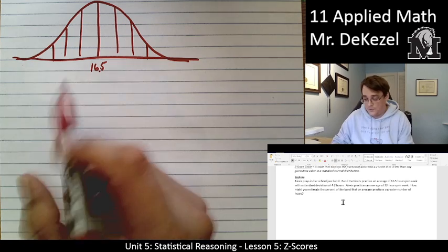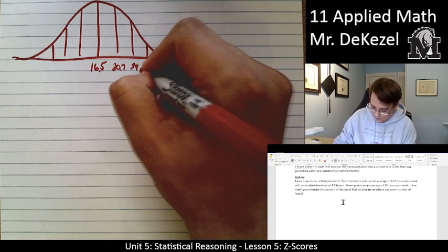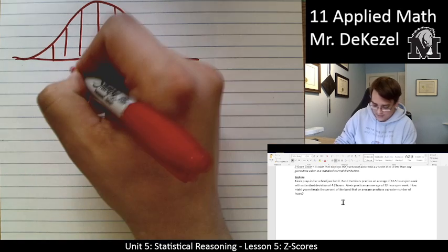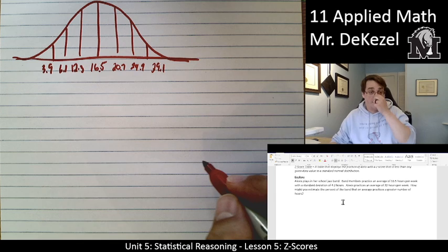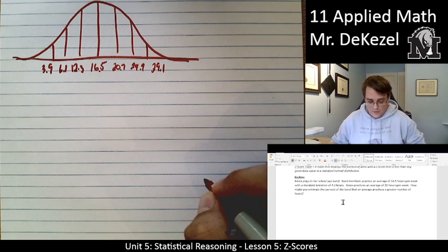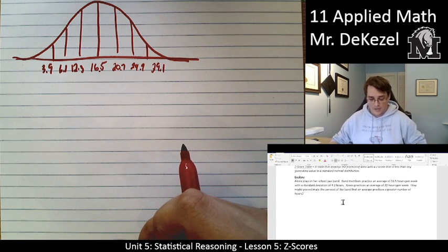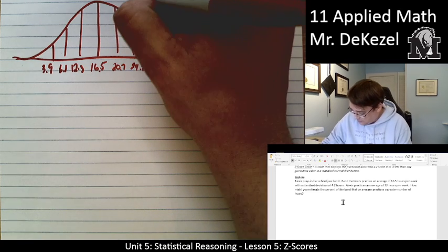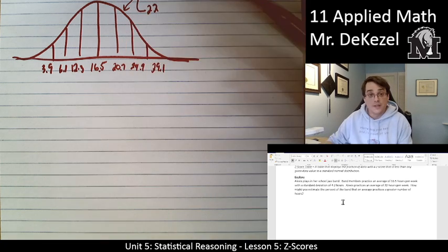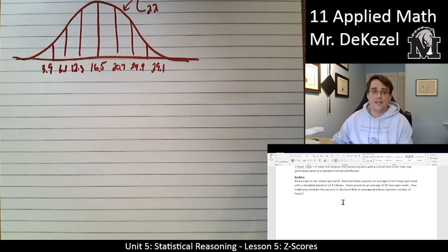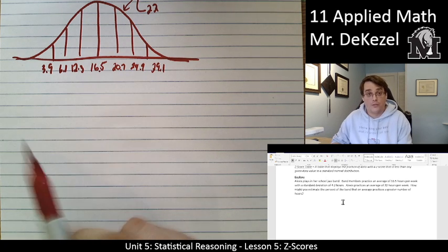You subtract the standard deviation from the mean, or add it, to find the values at each point. So above the mean we have 20.7, 24.9, and 29.1. Below the mean we have 12.3, 6.1, and 3.9 hours of practice. The question states that Alexis practices an average of 22 hours per week, and we want to estimate what percent of the band practices a greater number of hours.